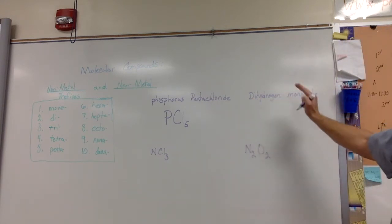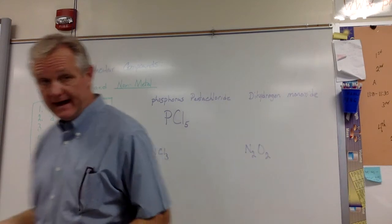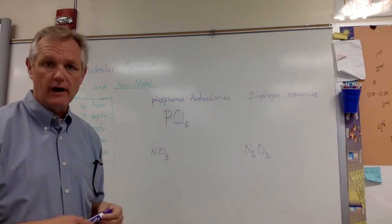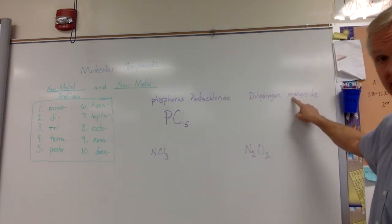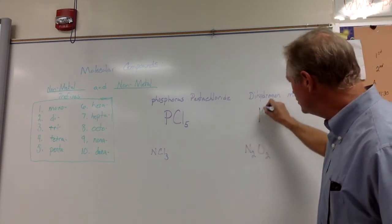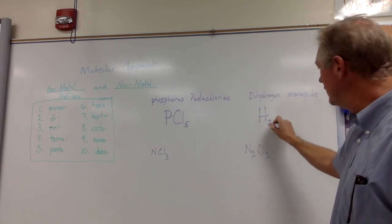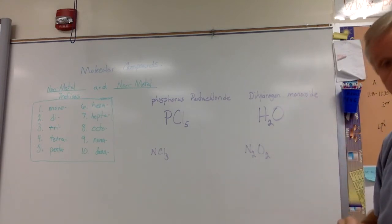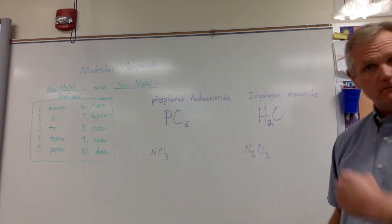This one says dihydrogen monoxide. Now if the prefix ends with a vowel and the element name starts with a vowel, you don't double the vowel — you drop the last vowel of the prefix. So instead of mono-oxide, we drop one of the O's and say monoxide. Hydrogen is H, di is two, so H2. Monoxide is oxygen and it's one, so I just leave it as O. Dihydrogen monoxide — the chemical name for water.